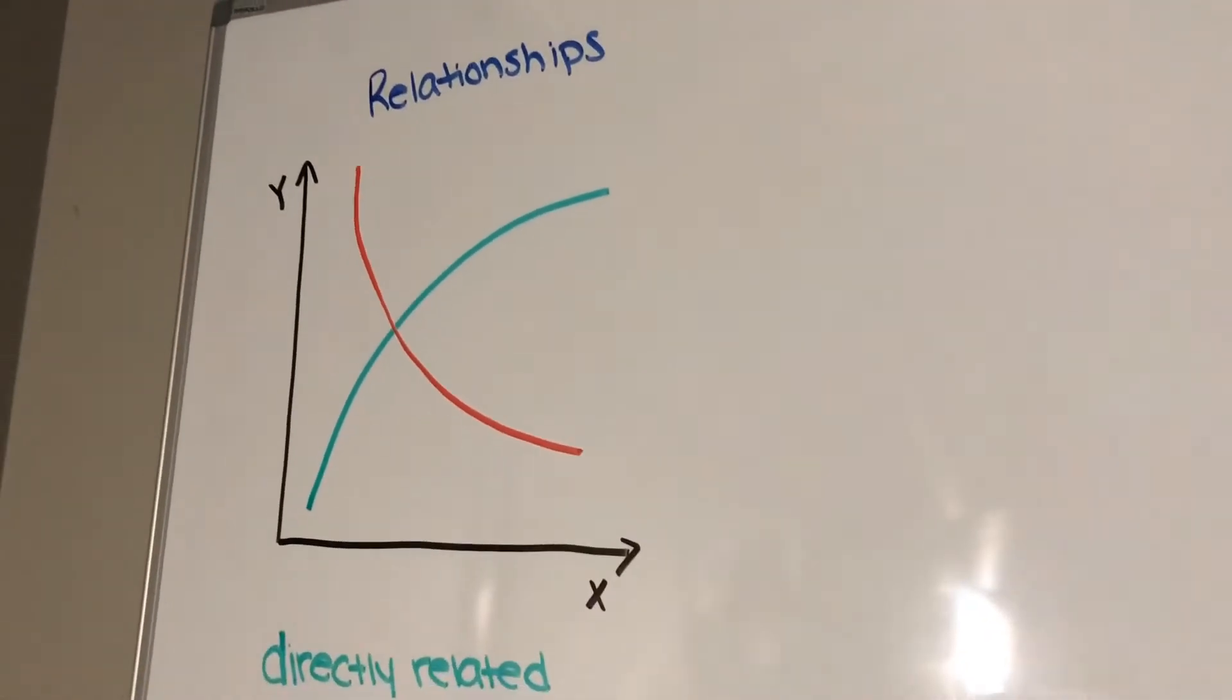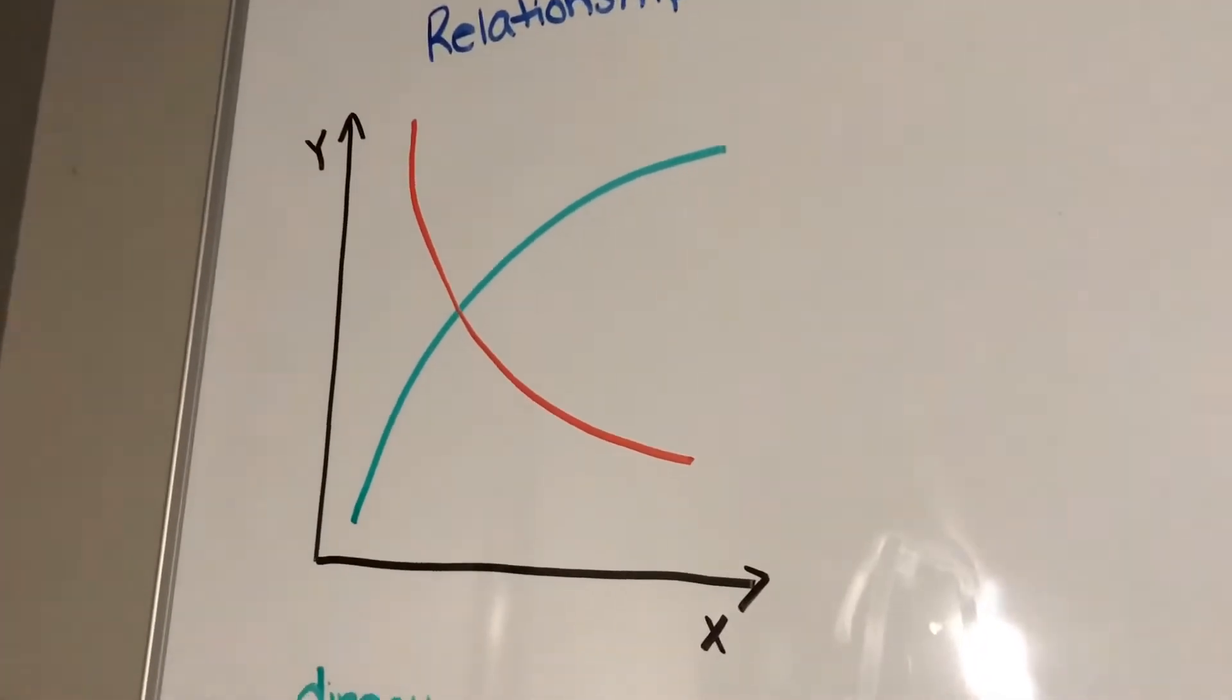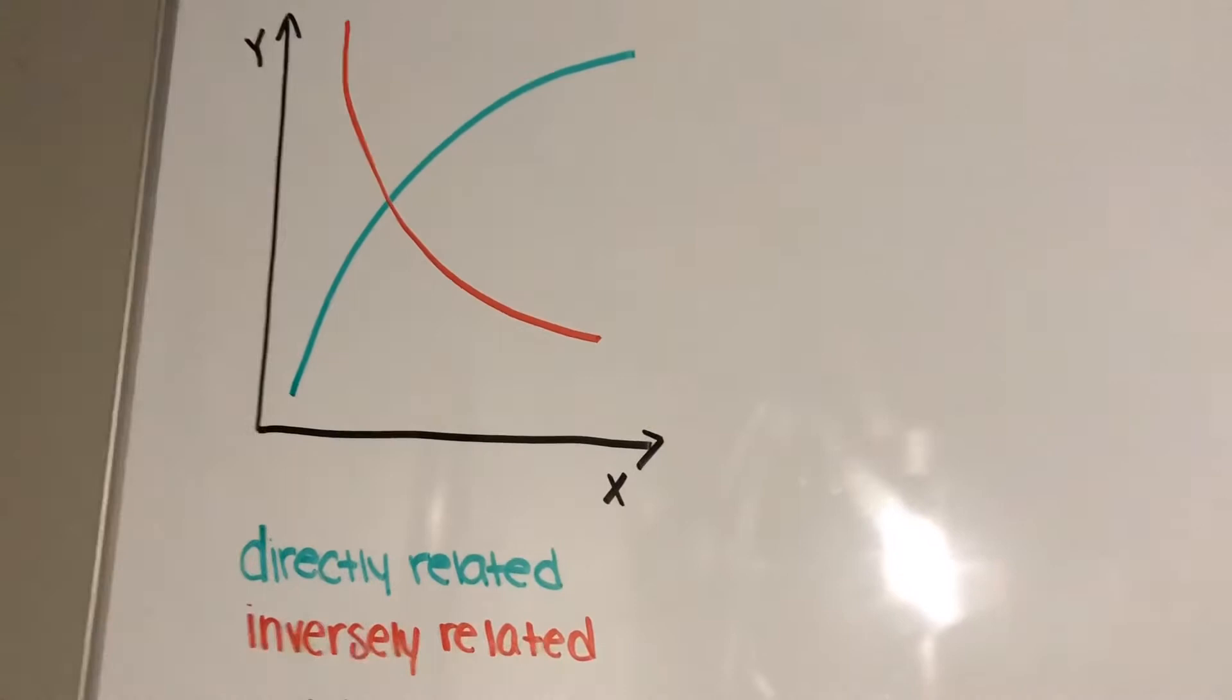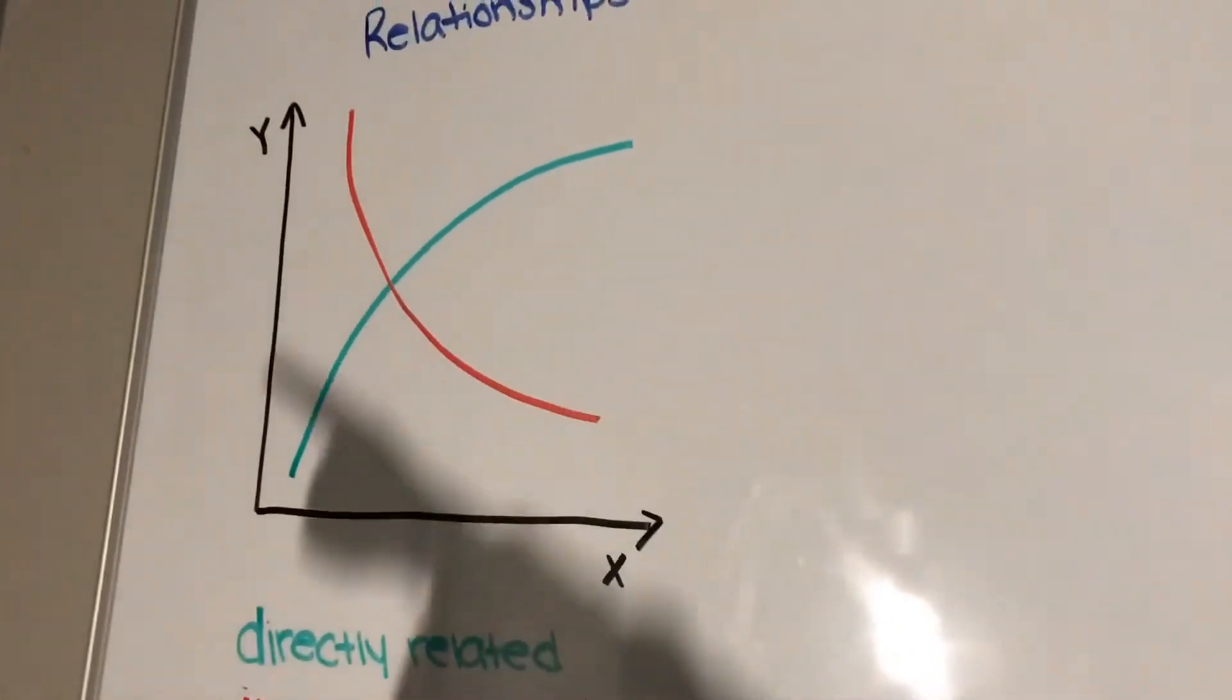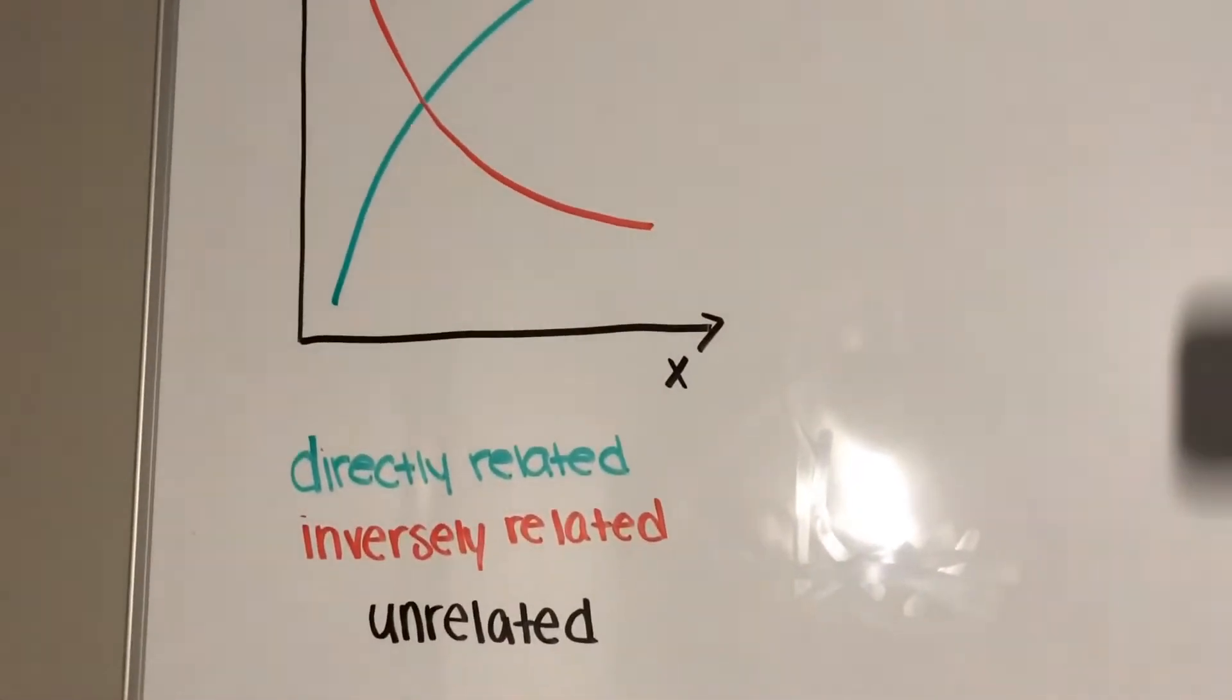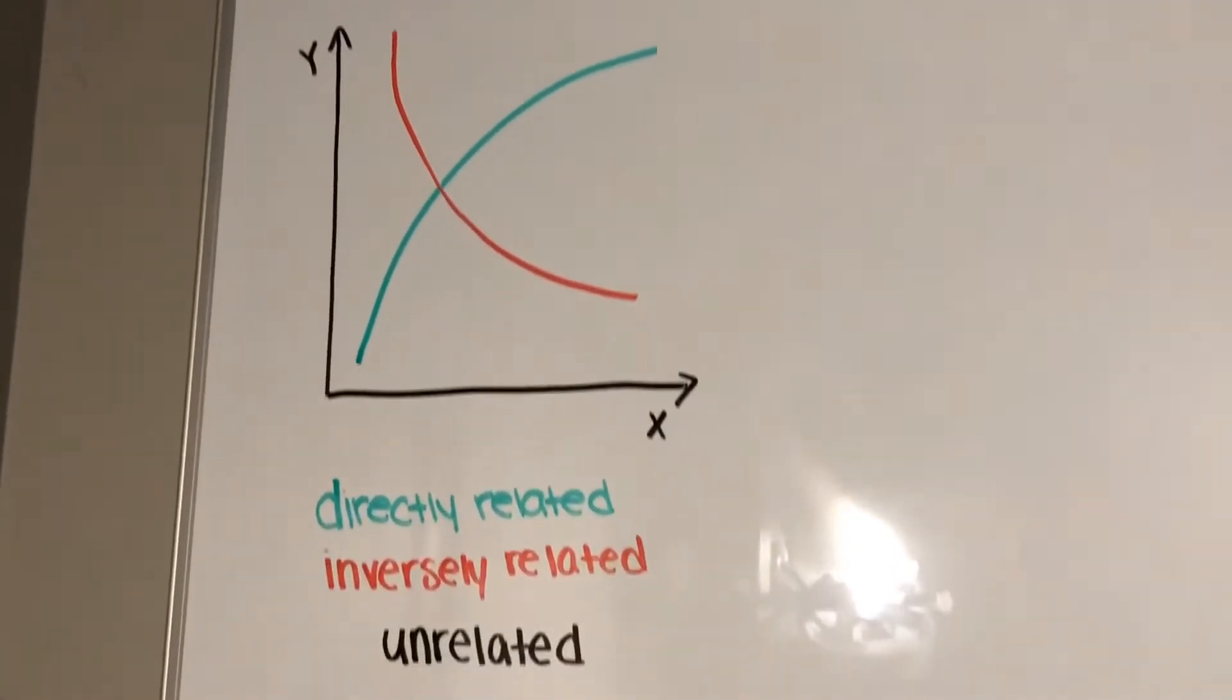In ultrasound physics, we want to be familiar with graphs, and we need to know that this is the x-axis, which runs horizontally, and this is the y-axis, which runs vertically. Different relationships include directly related, inversely related, and unrelated.